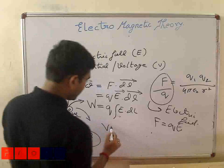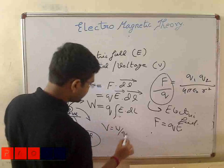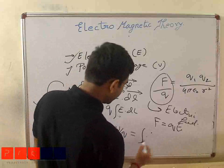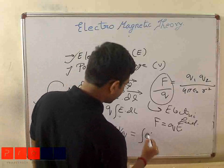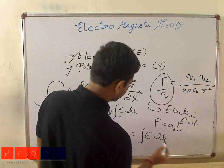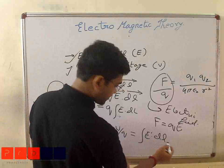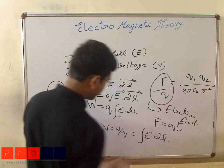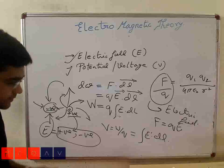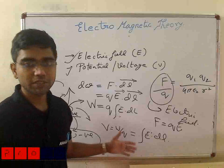So what will be my voltage? Voltage is nothing but W divided by Q, which will be equal to the integration of E dot dr. This will be the voltage — this will be my potential.